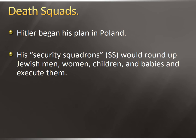Hitler began his Final Solution in Poland. He had groups called security squadrons, or the SS, and they would round up Jewish men, women, children, and babies and execute them right on the spot.